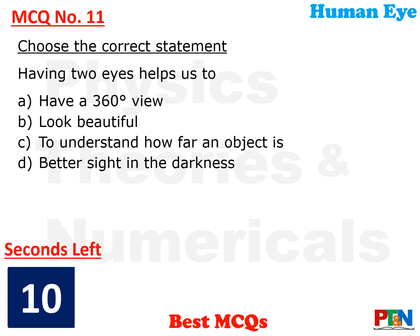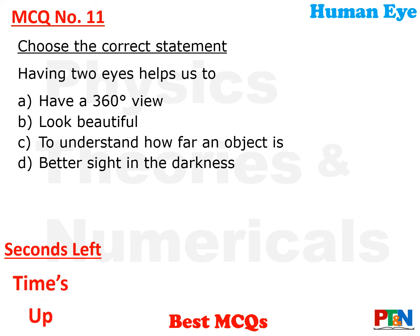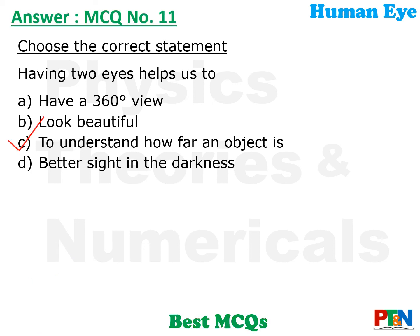Next MCQ — in fact the last MCQ for this video. You need to choose the correct statement about having better sight in darkness. Which one is correct? 10 seconds time. The answer is: having two eyes helps us to understand how far an object is — that is, to understand the depth of vision, how far an object is.